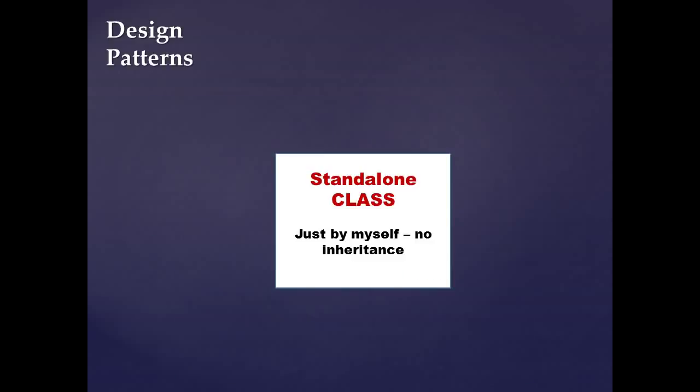Another option is a standalone class with no inheritance hierarchy — a class that's by itself. Some developers prefer this because they don't want a large hierarchy chain, which they find more complex. They prefer keeping everything in one class rather than dealing with methods overriding each other across multiple classes. The drawback is that this can be harder to maintain, especially with many classes — an inheritance hierarchy is generally easier to maintain.